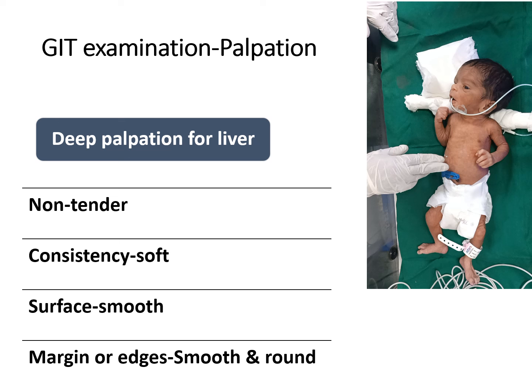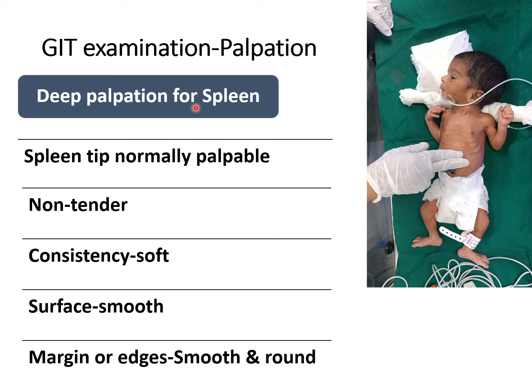Then we have to perform deep palpation for the spleen. We should start from the right iliac area and move towards the spleen, and palpate the spleen with the fingertip or the side of the finger. The spleen tip is normally palpable in the newborn — it is non-tender, soft, has a smooth surface, edges are round, and the spleen notch is palpable when we are palpating the spleen border.